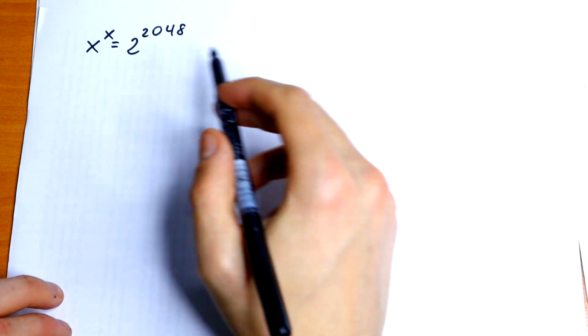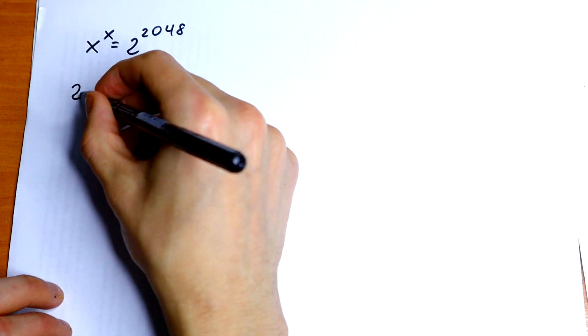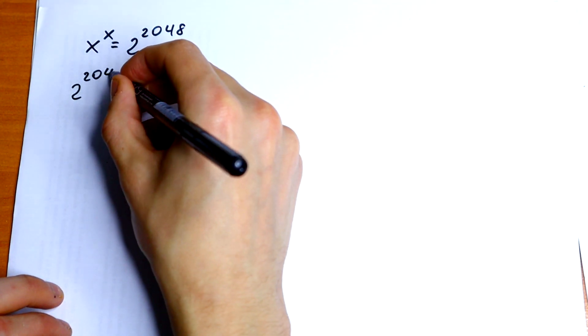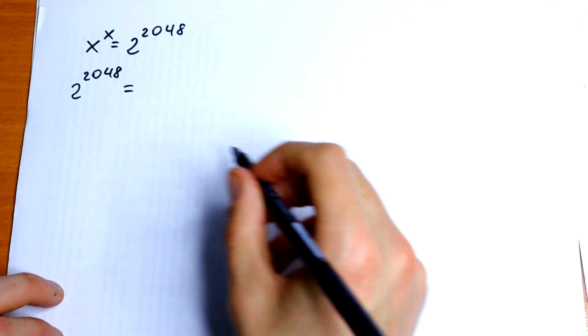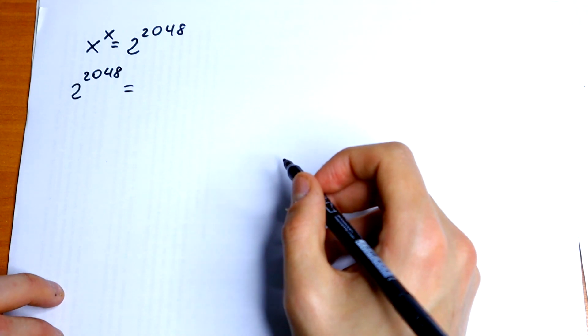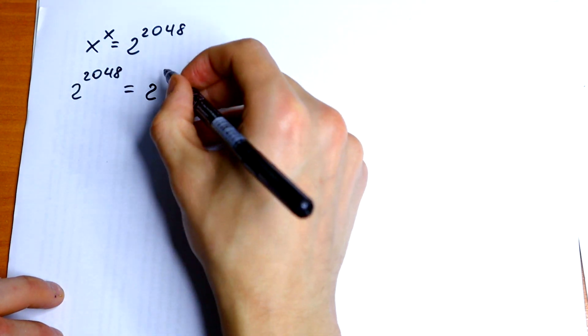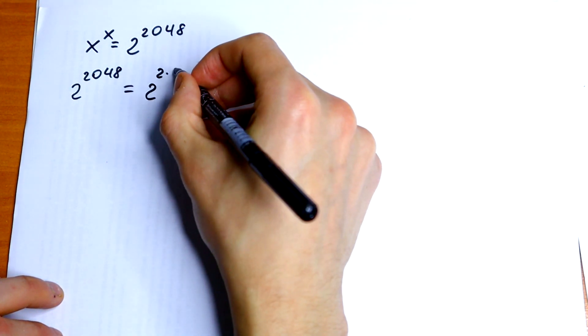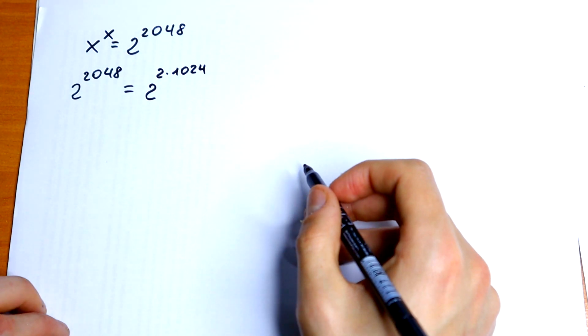So, how can we represent this on the right? We have 2 to the power 2048. How can we represent this? For sure we can write this 2048 as 2 times 1024. Let's do this. 2 to the power 2 times 1024. We can do this for sure.